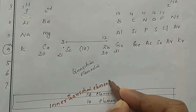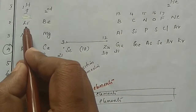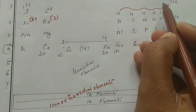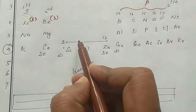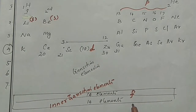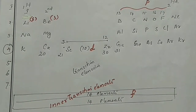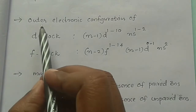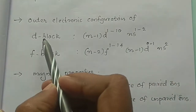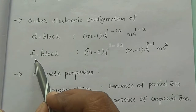Let's look at the electron configuration. Group 1 is S block, group 2 is S block. Groups 13 to 18 are P block. Groups 3 to 12 are D block. The lanthanides and actinides are F block. This gives us the general outer electronic configuration for D block elements and F block elements.